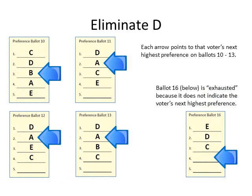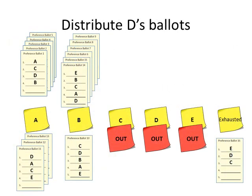Inspecting the five ballots in the stack for D, we see that the voter's next highest preference on ballot 10 is B, and the voter's next highest preference on ballots 11, 12, and 13 is A. We also see that the voter who cast ballot 16 did not express a fourth preference, so that ballot cannot be given to any of the remaining candidates. Ballots 11, 12, and 13 go below the sticky note for A; ballot 10 goes below the sticky note for B; and ballot 16 goes to the exhausted stack.